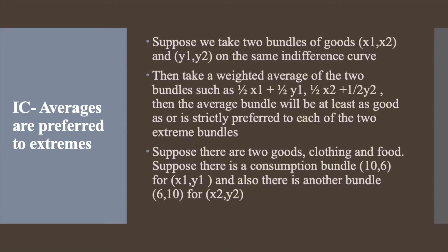This average bundle will be indifferent or will be preferred to the above given two extreme bundles of food and clothing, that is (10,6) and (6,10). So the weighted average bundle has the average amount of food and the average amount of clothing that is present in the two bundles. Here we half the value or took average, but we are going to assume this for any weight t between 0 and 1 and not just half.